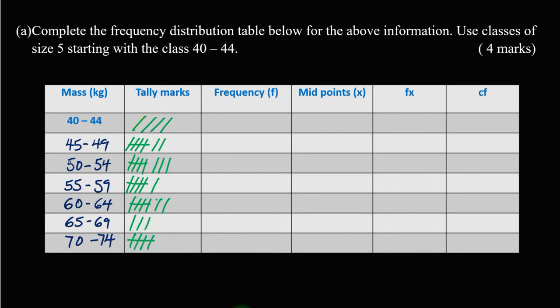So writing down the frequencies: we have 4, then 7, then 8, then 6, then 7, then 3, and 5. Next we need the midpoint column x.